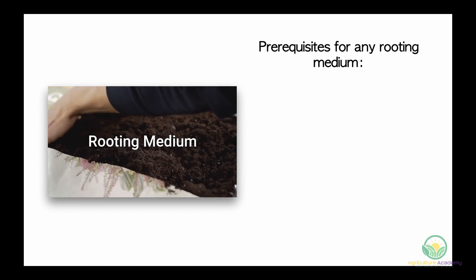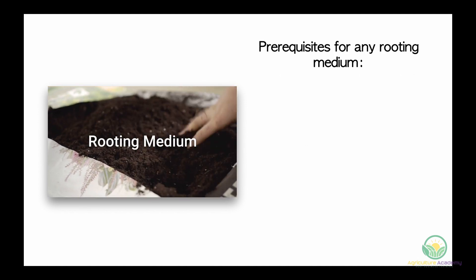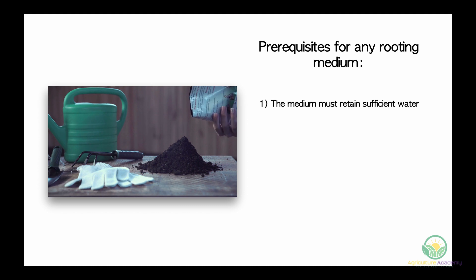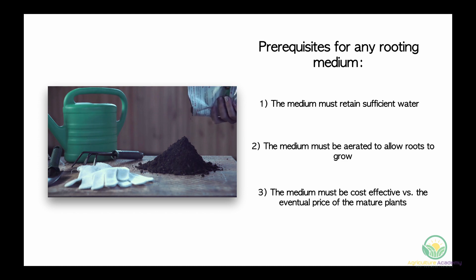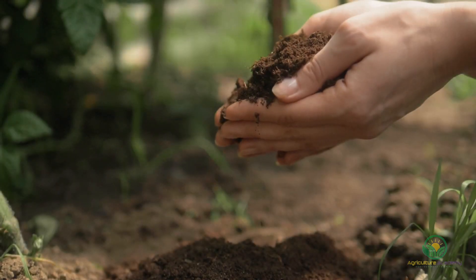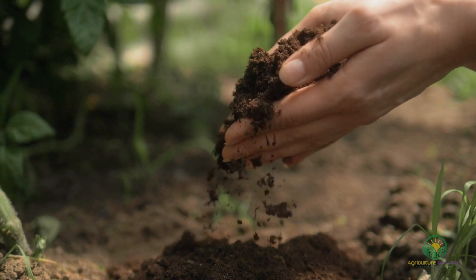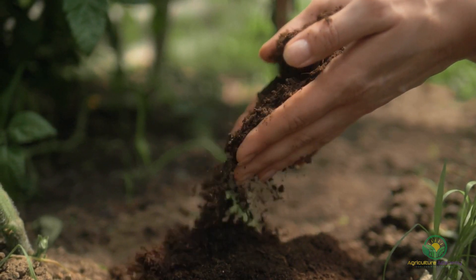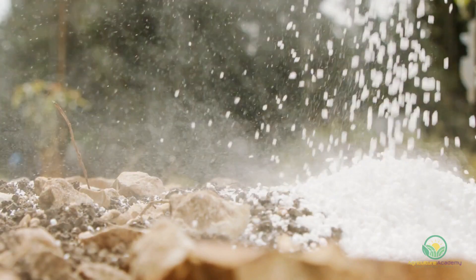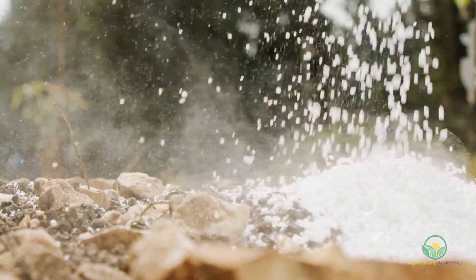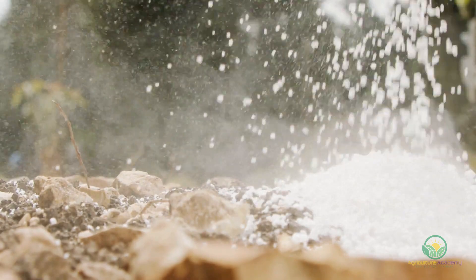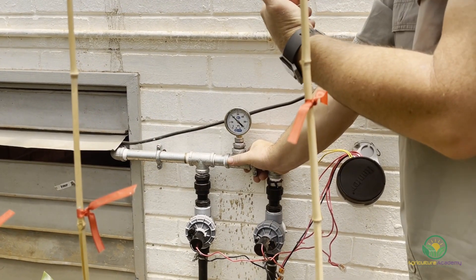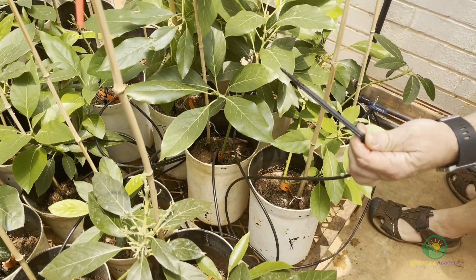Rooting medium. The prerequisites for rooting media are: one, the media must retain sufficient water; two, the media must be aerated to allow roots to grow; and three, the media must be cost-effective against the price of the eventual mature plants. For more information on the different rooting media you can use in your propagation unit, check out the video linked above. Some media can also contain small amounts of nutrients, which can supplement the young cuttings before they are transplanted into nutrient-rich soil. Fertigation and slow-release fertilizers can also be used to supplement nutrient levels.